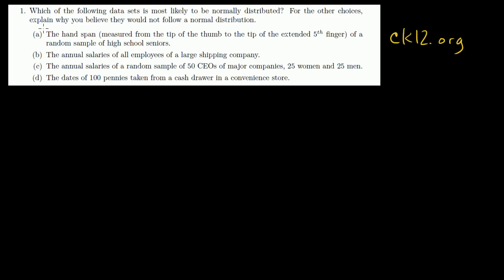So this first problem: Which of the following data sets is most likely to be normally distributed? For the other choices, explain why you believe they would not follow a normal distribution. So let's see, choice A. This is really, you know, my beliefs come into play. So this is unusual in the math context. It's more of a what do I think, kind of an essay question. So let's see what they have here. A, the hand span measured from the tip of the thumb to the tip of the extended fifth finger.